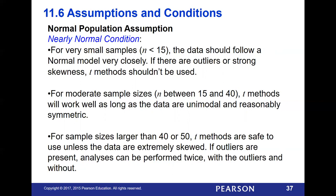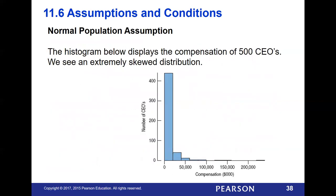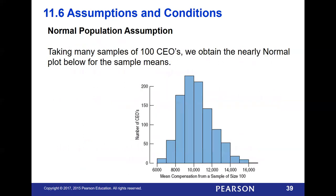For a moderate sample size between 15 and 40, T methods work fine as long as it's unimodal and looks reasonably symmetric. For sample sizes larger than 40 or 50, you can safely assume the T model will work unless you have a super huge skew. If there are outliers, look at your data twice — once with and once without — to see if they're affecting things. This histogram shows compensation of 500 CEOs with a very skewed distribution, but a plot of 100 CEO sample means gives a nearly normal distribution.